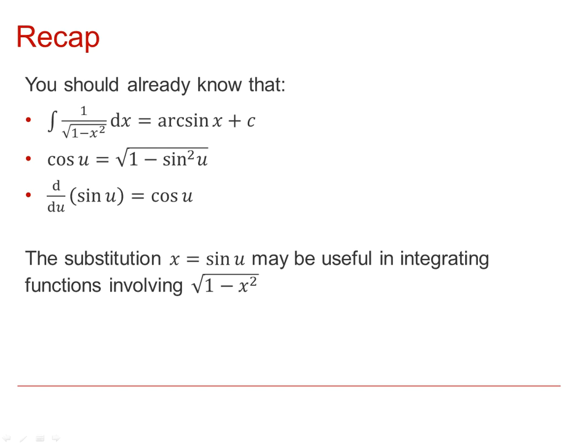Here we have some results that you should already know. Firstly, the standard integral that 1 over the root of 1 minus x squared dx is arcsin(x) plus c. An identity: cos(u) equals the square root of 1 minus sin²(u), which comes from cos²(u) plus sin²(u) equals 1. And the derivative with respect to u of sin(u) is cos(u).